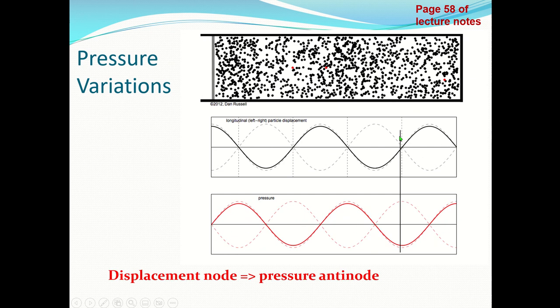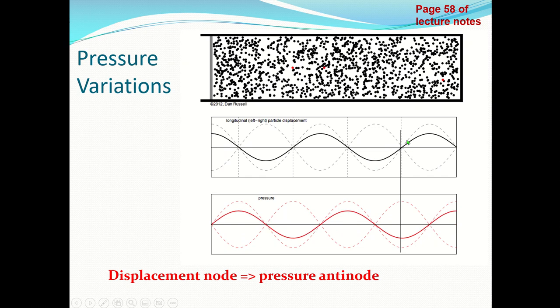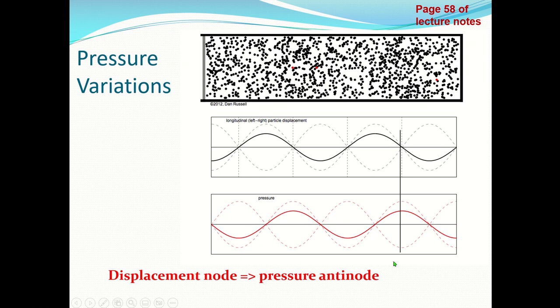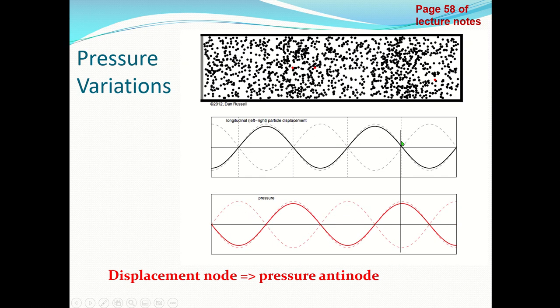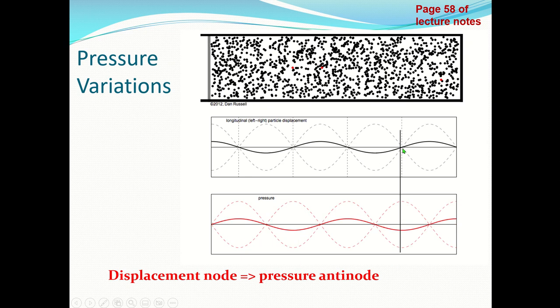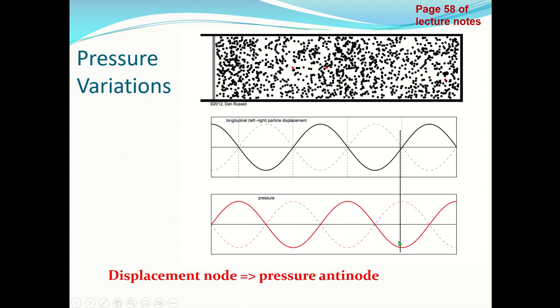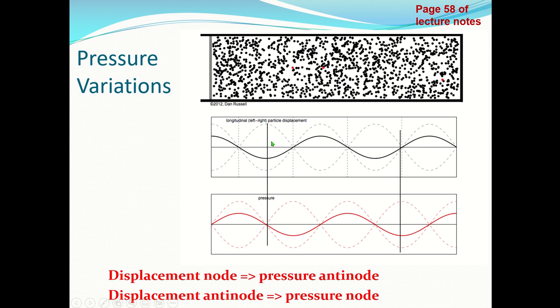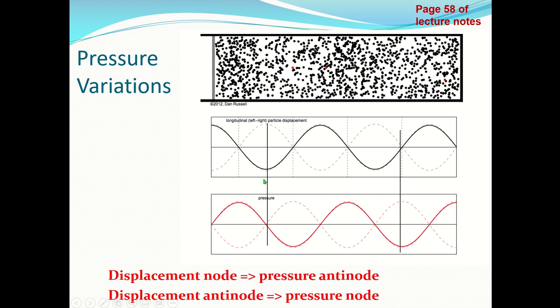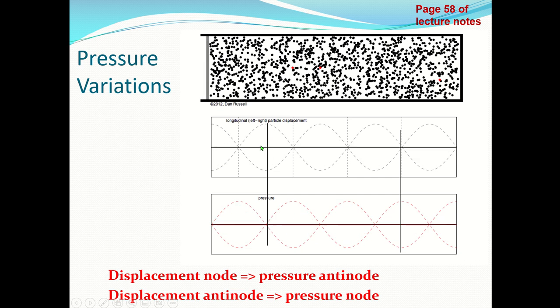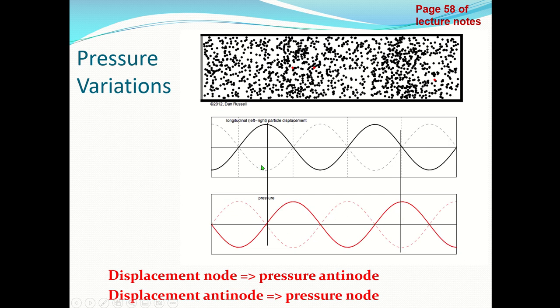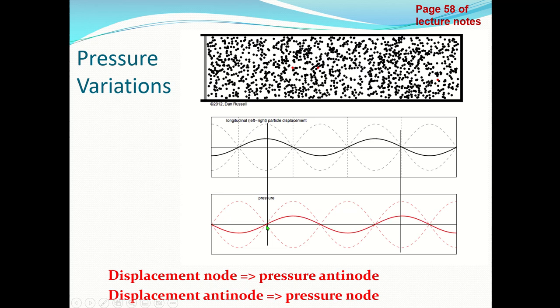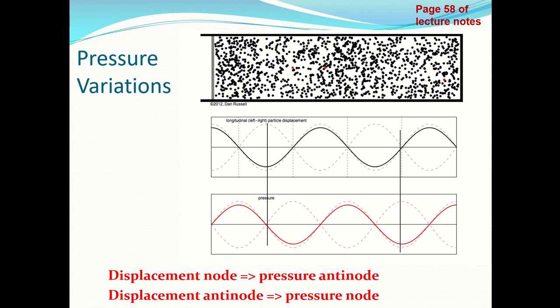What we find is where we have a displacement node, that corresponds to a pressure antinode. Displacement is almost constant at zero, but the pressure is varying the most. At a displacement antinode, where the amplitude is maximum, we find that the pressure is pretty much constant. We have a pressure node.